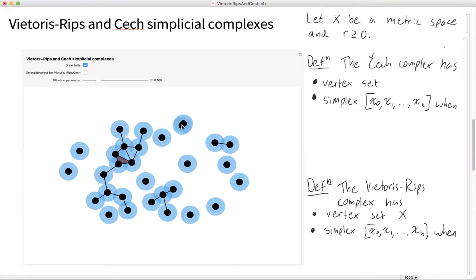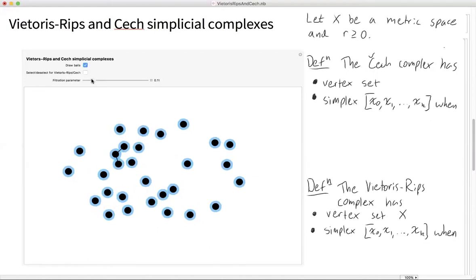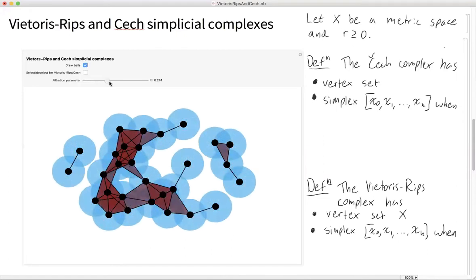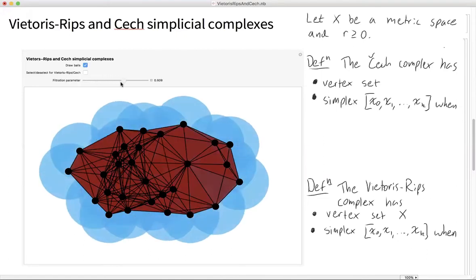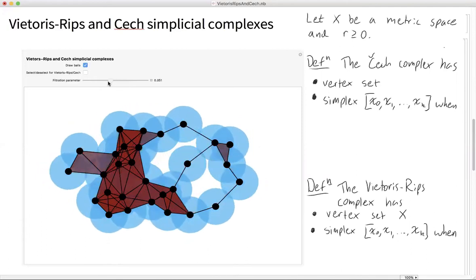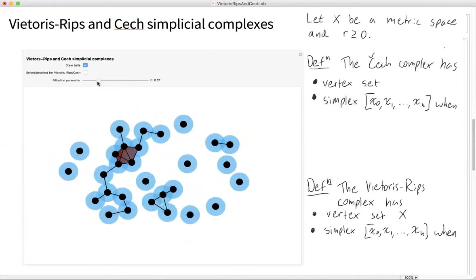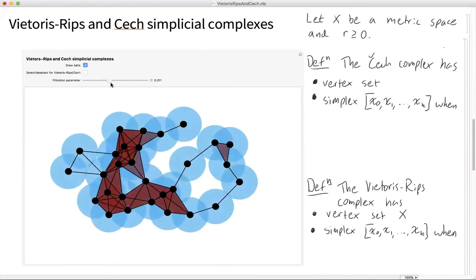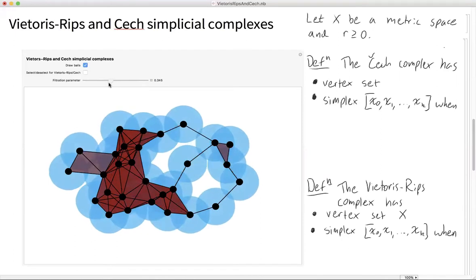So there, I just added a point. I can also remove a point. And what's being drawn here is the Čech complex. And I have this little toggle which is varying a scale parameter. It's varying the radius of the balls and somehow that determines what edges appear, what triangles appear, which tetrahedra appear, etc., as we'll discuss.